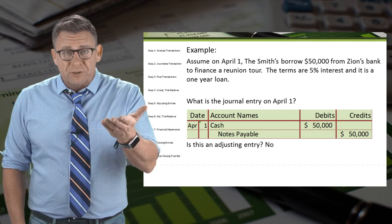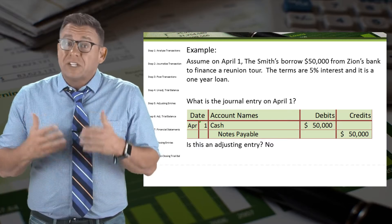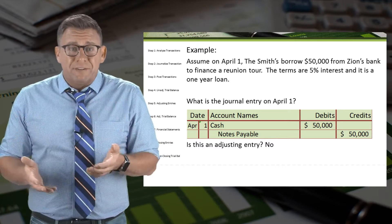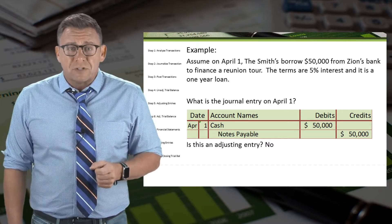Is this an adjusting entry? No, because there's an underlying event that happens on April 1.